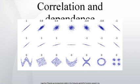Common Misconceptions — Correlation and Causality. The conventional dictum that correlation does not imply causation means that correlation cannot be used to infer a causal relationship between the variables. This dictum should not be taken to mean that correlations cannot indicate the potential existence of causal relations. However, the causes underlying the correlation, if any, may be indirect and unknown, and high correlations also overlap with identity relations and tautologies where no causal process exists. Consequently, establishing a correlation between two variables is not a sufficient condition to establish a causal relationship in either direction.